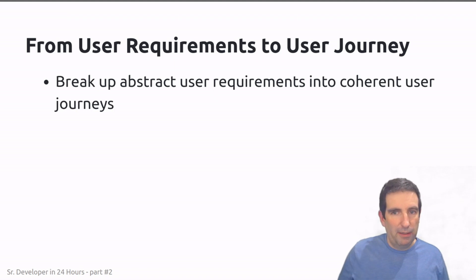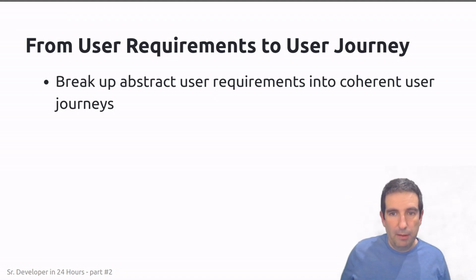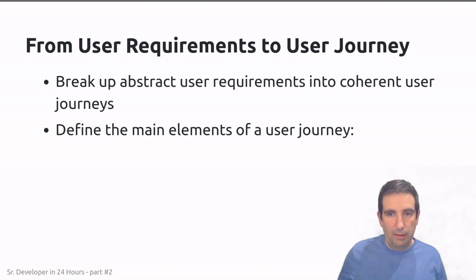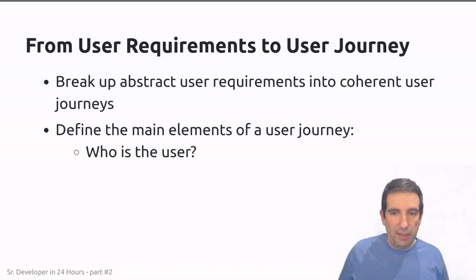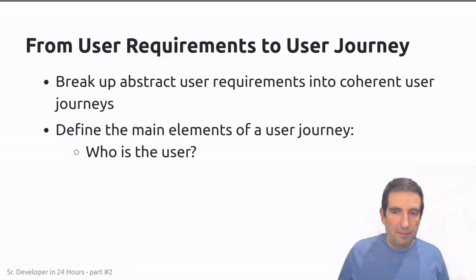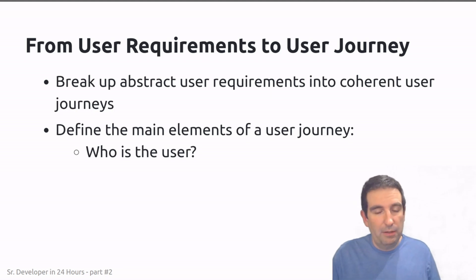We're breaking apart an abstract user requirement and turning it into a coherent user journey. What are the main things a user journey is going to define for us? The first thing is: who is the user — who is the person that is going to be using this functionality? This is important because everything we do is going to be from their perspective.